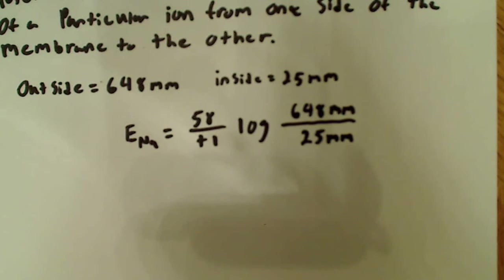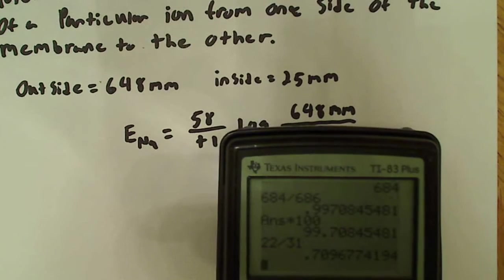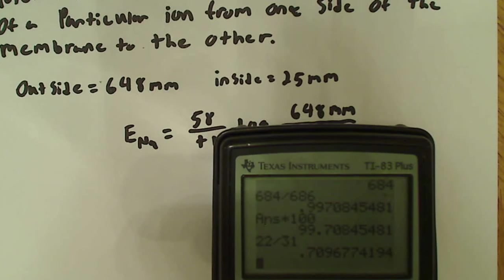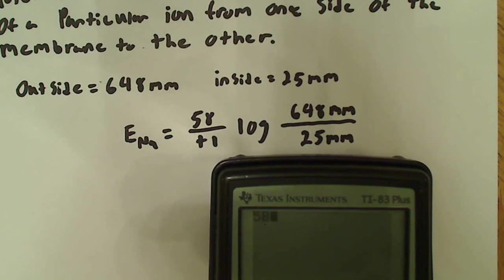So, I mean, you know, you'll likely be able to use a calculator in a lot of these problems. So, I would just simply bring this calculator up here and say, all right, so the answer is 58. Where's my log of 648 over 25, and that gives us about 82.